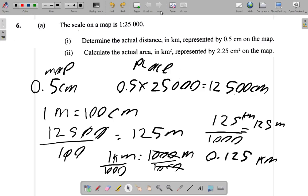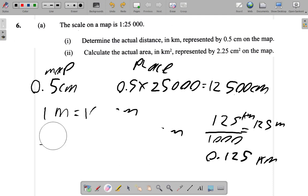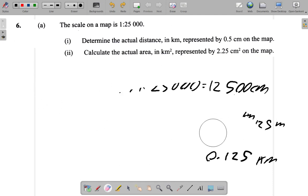Let's look at question six part two. Let me erase some of these things to make space because they're working for part one. Let's look at question six two. Calculate the actual area in kilometers squared represented by 2.25 centimeters squared on the map.